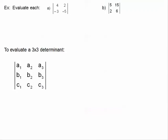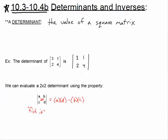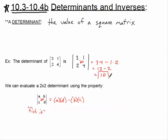Let's look at this 2x2 determinant. If we wanted to fish it, or find the determinant, we would say 3 times 4 minus 1 times 2. 3 times 4 is this diagonal, minus 1 times 2, which is this diagonal. So that is 12 minus 2, and that is 10. The determinant here for this 2x2 is 10 — that's the value of this square matrix.